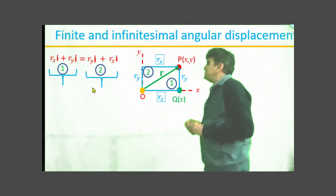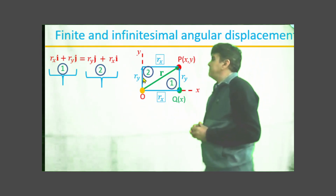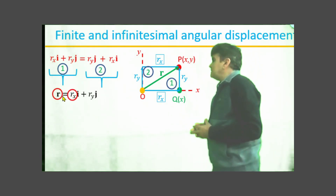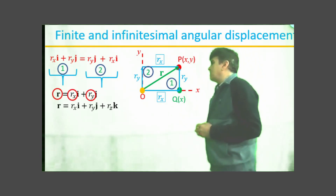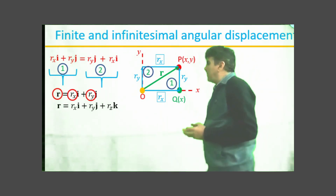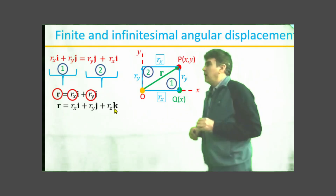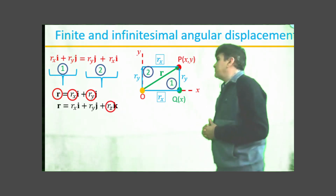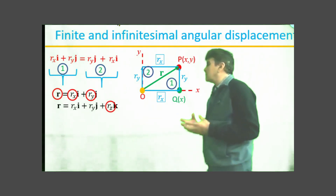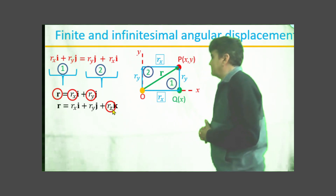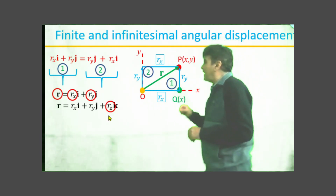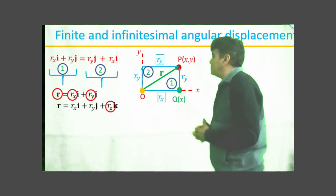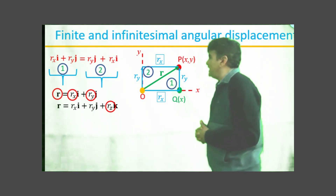Thus we can express the displacement vector R as R_x·i + R_y·j. And if point P is located in space then we obviously add another component along the z-axis, which I denote here by R_z·k, where k is the unit vector along the z-axis.